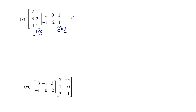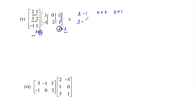We'll get 9 elements. First row with first column: 2 into 1 is 2, plus 1 into negative 1 is negative 1. First row with second column: 2 into 0 is 0, plus 1 into 2 is 2. First row with third column: 2 into 1 is 2, plus 1 into 1 is 1. Second row with first column: 3 into 1 is 3, plus 2 into negative 1 is negative 2. Second row with second column: 3 into 0 is 0, plus 2 into 2 is 4. Second row with third column: 3 into 1 is 3, plus 2 into 1 is 2.